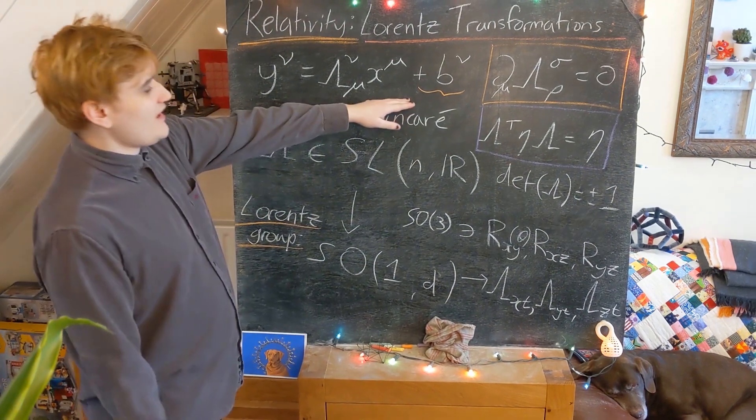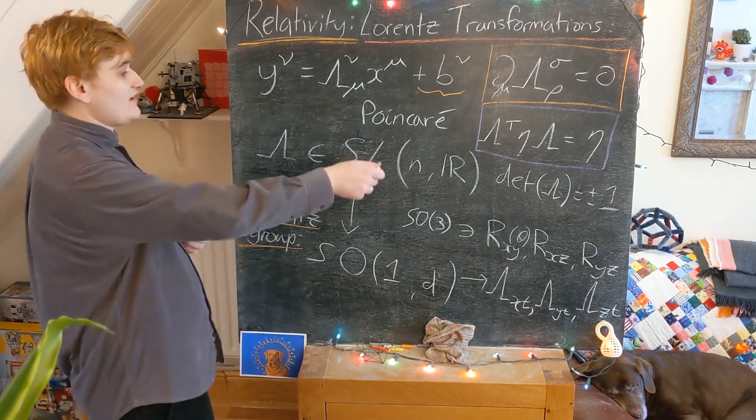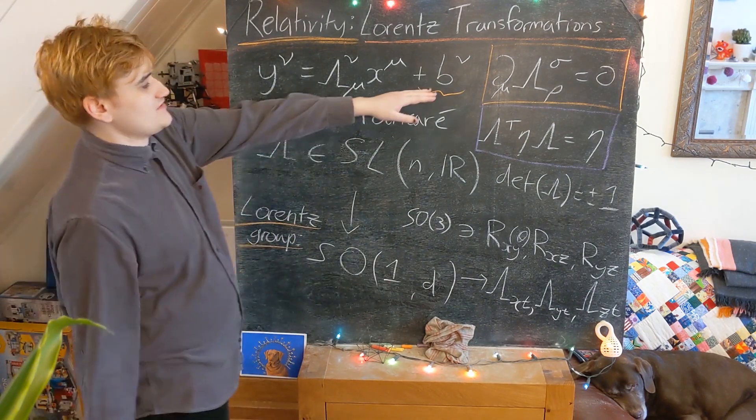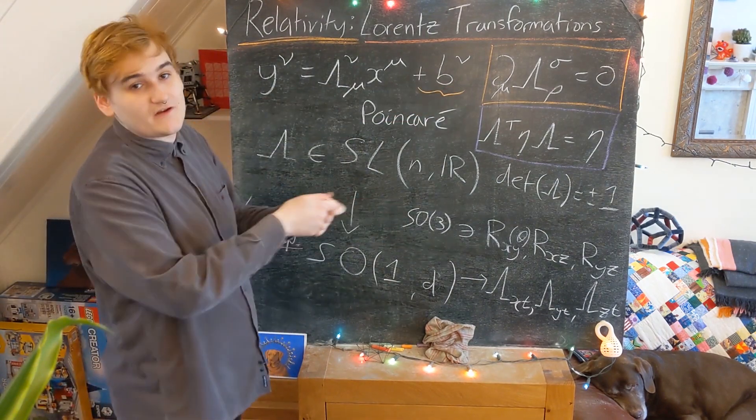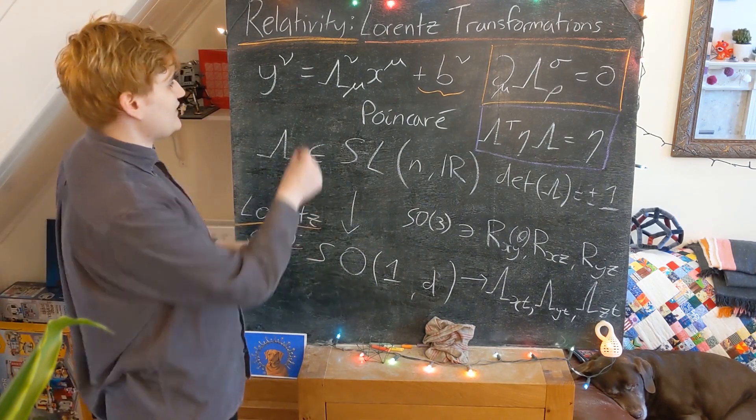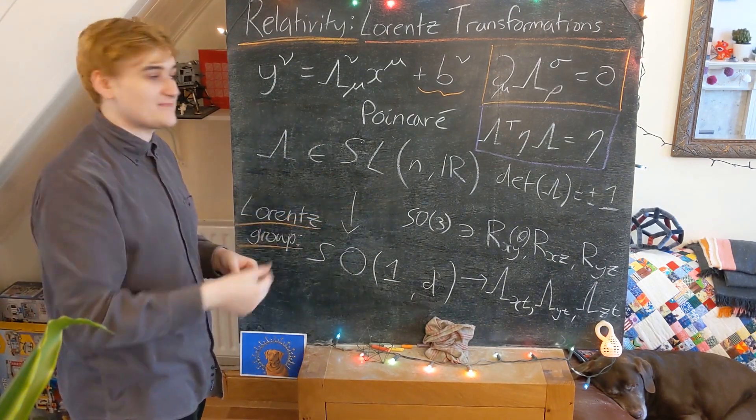And if we now allow for these extra transformations, we can effectively realize that we're going to have four possible more transformations. So we have the three rotations, the three boosts, and then the four possible Poincaré transformations in each coordinate direction. Because you can transform by a different amount in each coordinate direction, just shifting the origin to a different place in space-time, essentially.